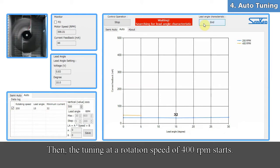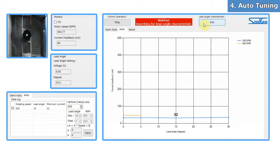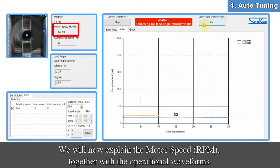Then, the tuning at a rotation speed of 400 RPM starts. We will now explain the motor speed together with the operational waveforms.